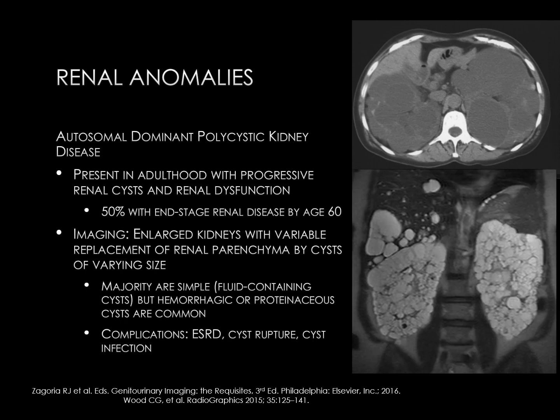In the right lower aspect of the slide, we see an MRI example of autosomal dominant polycystic kidney disease. The massively enlarged kidneys are replaced by numerous T2 bright cysts. There are also many cysts noted within the liver.